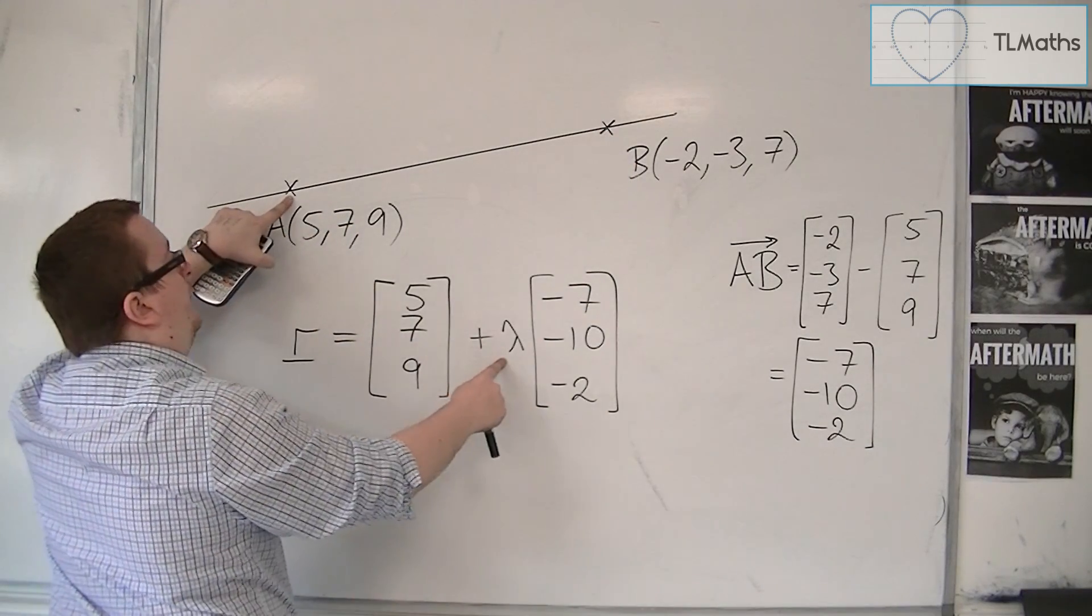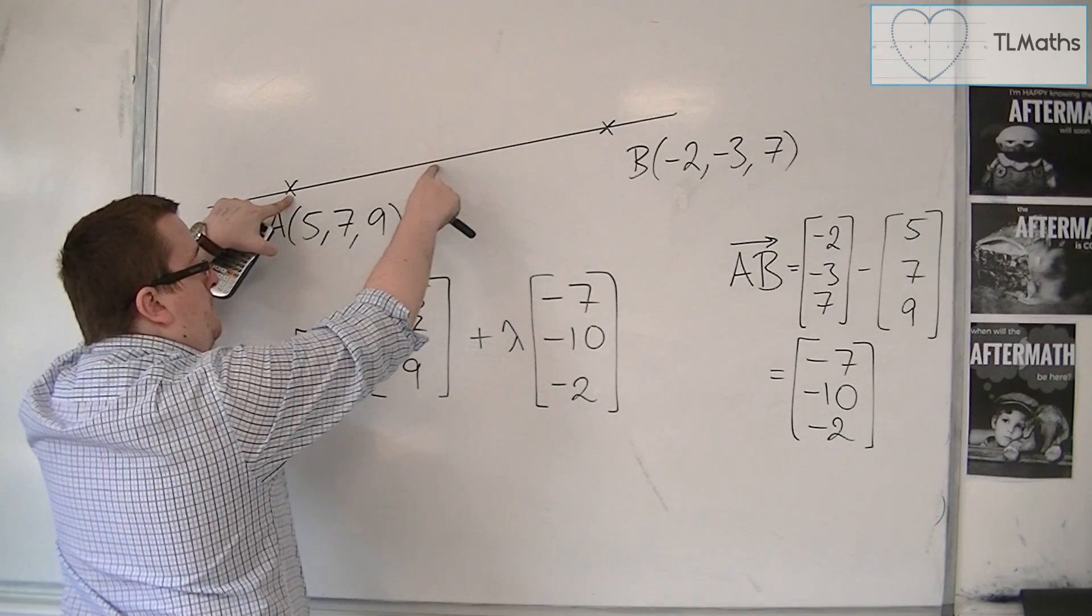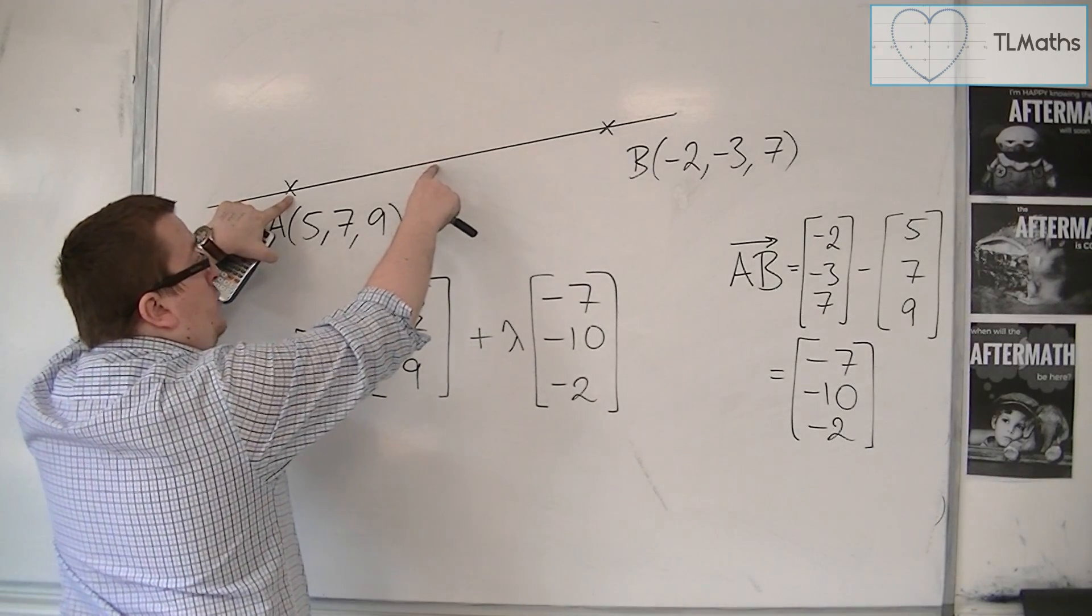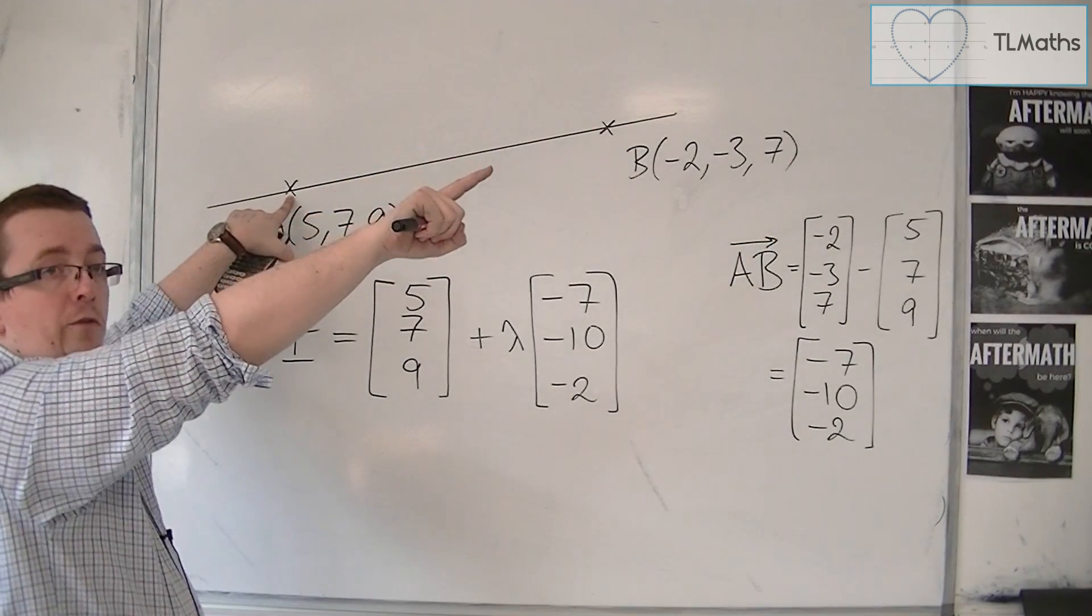If lambda was a half, it would get me halfway along the line to that point there. If lambda was 100, it would get me all the way along, a long way along that line.